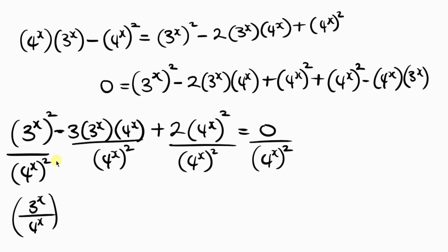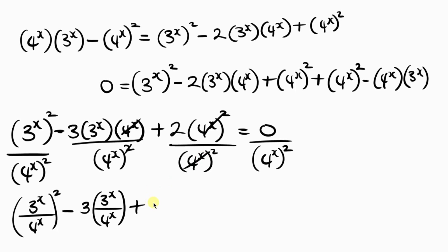Joining the powers — since they have the same powers — we get 3 to power x over 4 to power x for the first term. For the middle term, one factor of 4 to power x cancels, leaving 3 times 3 to power x over 4 to power x. The last term divides to give 2. So we have: 3 to power x over 4 to power x, all squared, minus 3 times 3 to power x over 4 to power x, plus 2, equal to 0. This looks like a quadratic.